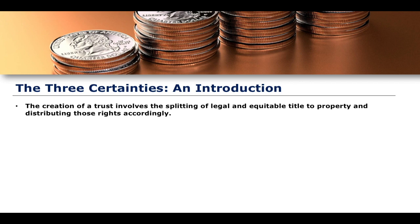So, what are the three certainties? We know already that the creation of a trust involves the splitting of legal and equitable title to property, distributing those rights accordingly. You distribute the legal title to the trustee and the equitable title to the beneficiary, and then you have the fiduciary relationship which exists between the trustee and the beneficiary. The process of doing so requires quite a few steps to create a valid trust instrument.